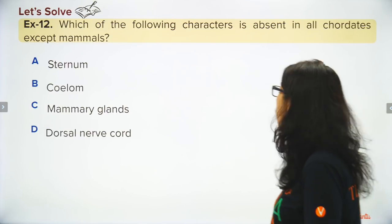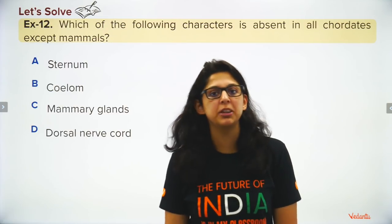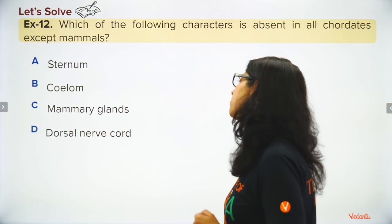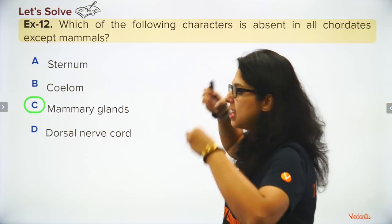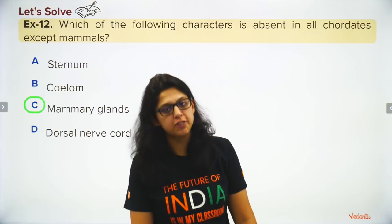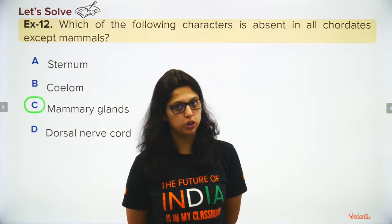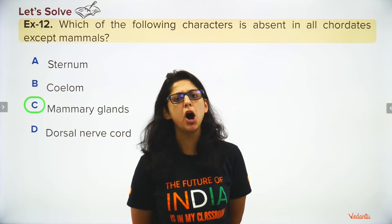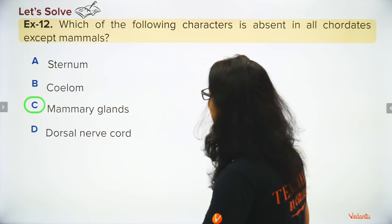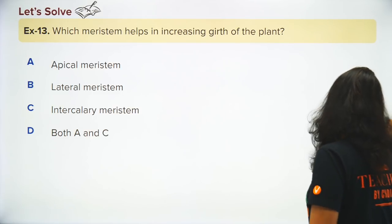Which character is absent in all chordates except mammals? The presence of mammary glands is a characteristic feature of mammals — even egg-laying mammals like the duck-billed platypus have mammary glands.